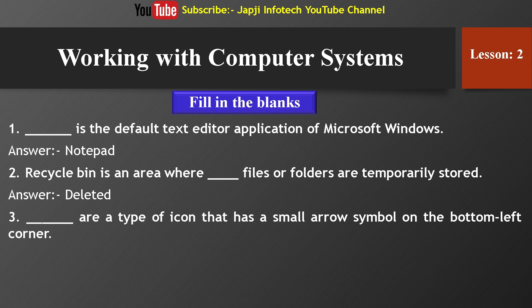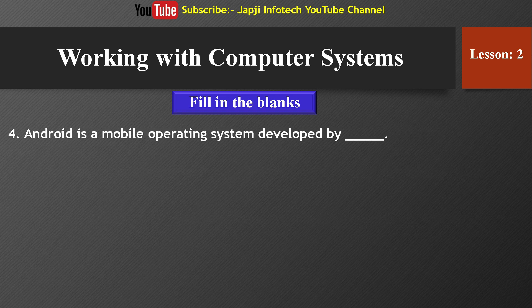Third blank: Shortcuts are a type of icon that has a small arrow symbol on the bottom left corner. Fourth: Android is a mobile operating system developed by Google.